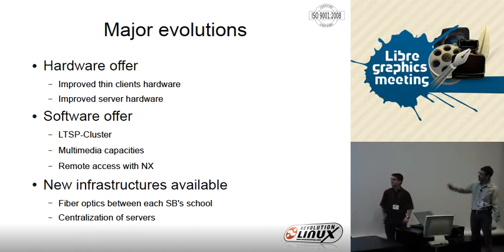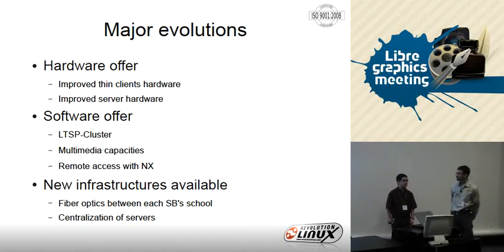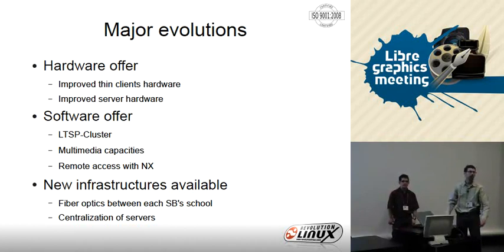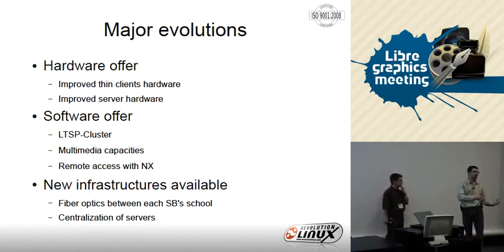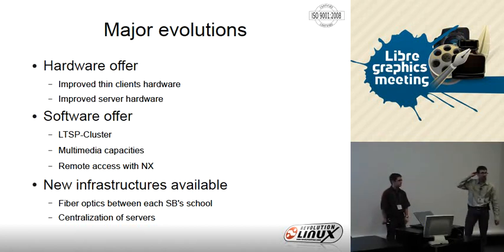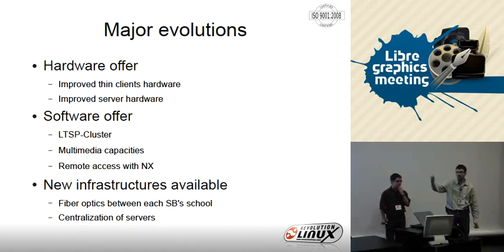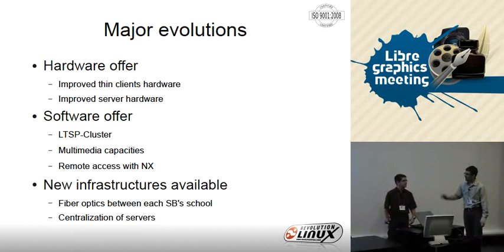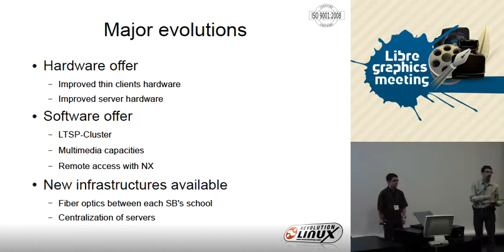On the software side, we at Revolution Linux introduced LTSP cluster, which is open source and developed like all open source software normally, enabling clustering of LTSP servers. It can offer a large pool of servers from which thousands of thin clients can boot. We have clients in Laval — very near here — where they have almost 5,000 thin clients deployed from a central location, directly in the schools. When a technician plugs in a thin client, he doesn't have anything to do — it just works. We don't have to reconfigure the network; it just works out of the box.